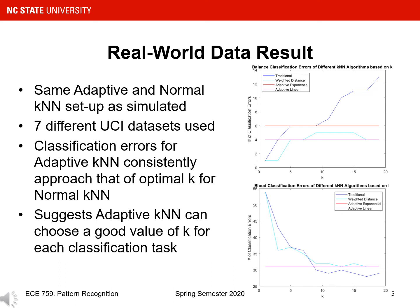While not all my results are shown on the slide, on the right you can see graphs for the results of two real-world datasets. The graphs show the number of classification errors for each algorithm as k varies in the normal KNN algorithms. The top graph for the balanced dataset shows that the normal KNN algorithms perform better at smaller values of k, and the performance of the adaptive KNN algorithms is between that of the best and worst k-values for the normal KNN algorithms. The bottom graph for the blood dataset shows that the normal KNN algorithms perform better at larger values of k, and the adaptive KNN algorithms are very close to the optimal performance of the normal KNN algorithms. These results, while not as strong as the simulated data results, also suggest that the adaptive KNN algorithms can choose a good value of k for each classification task.